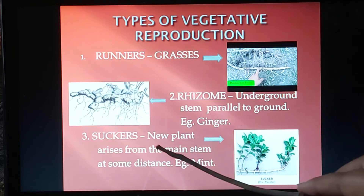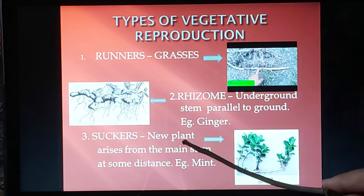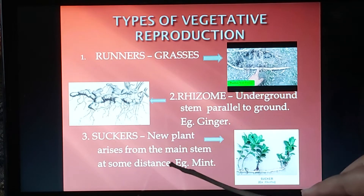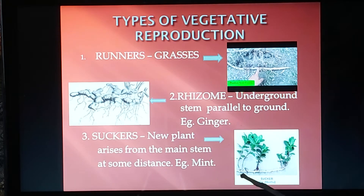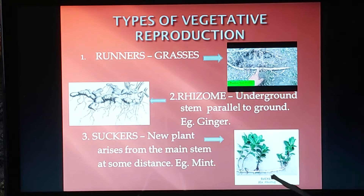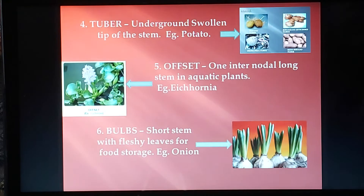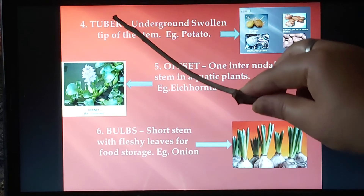Next is suckers. In the case of suckers, a new plant arises from the main stem at some distance. As you can see in this picture, another stem is arising from the main stem at a small distance. The best example is mint — mint keeps spreading from one point to another and can cover an area in a very short duration.